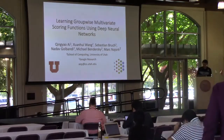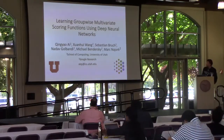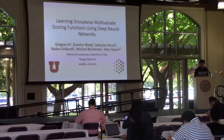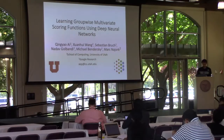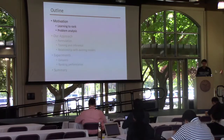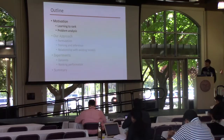Good morning, everyone. My name is Tianan, and today I'm going to present our work on learning proof-wise multivariate scoring function using deep neural networks. This is my previous internship work at Google Research. Here is the outline of this presentation. In the first part, we will introduce the working reading of our paper about learning to rank and problem analysis.